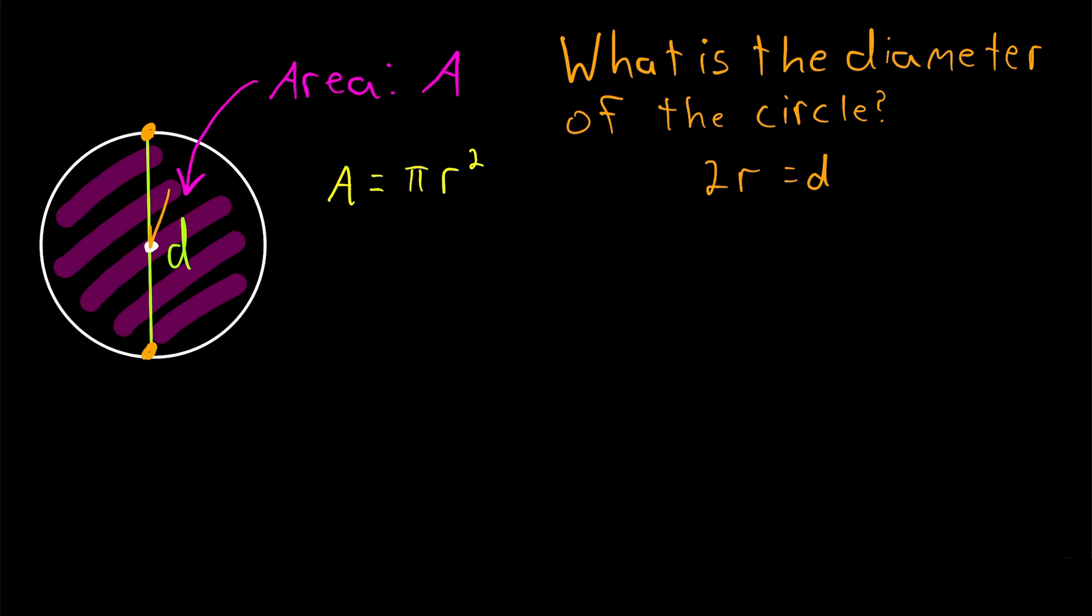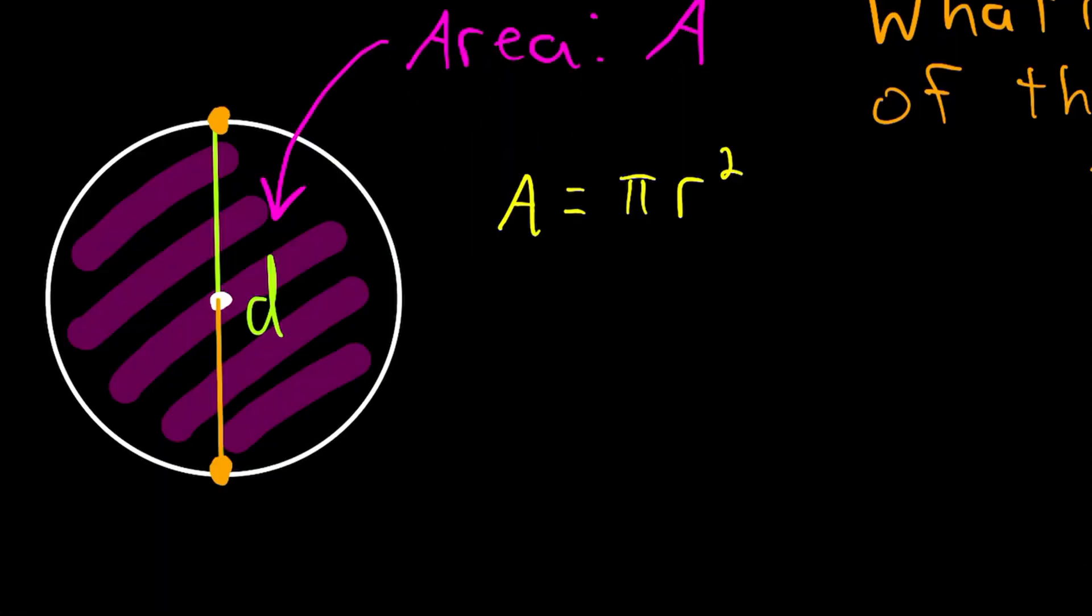Whereas the radius length of a circle is the length of a segment from the circle to the center. So of course two times the radius is the diameter.